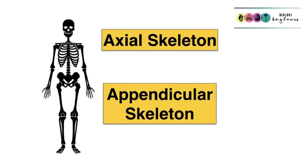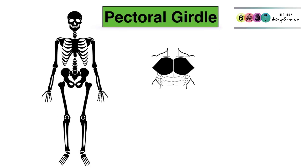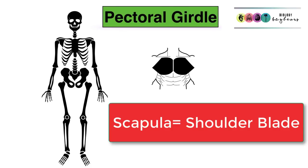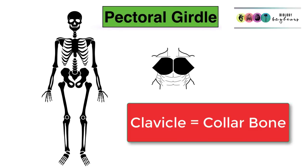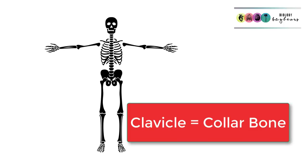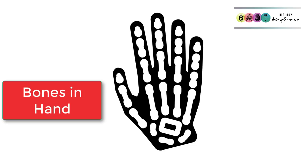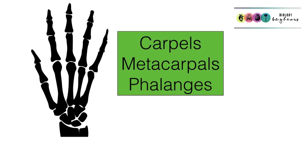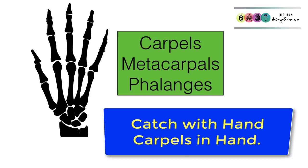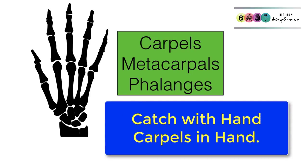The appendicular skeleton is made up of two girdles. The first is the pectoral girdle — think of your pecs. It's made up of your scapula and your clavicle, your shoulder blade and your collarbone, and you've got two of those. It's also made up of the bones of the arms: the humerus, the radius, and the ulna. And the bones of the hand: the carpals, metacarpals, and phalanges. Think of carpals — C for catching — to connect those with the hand.